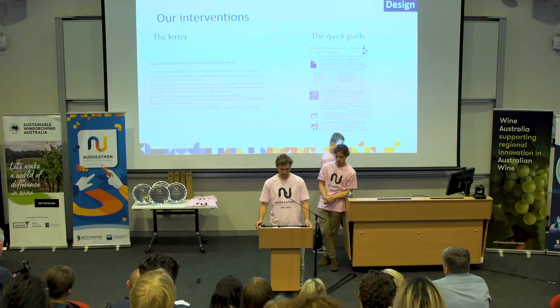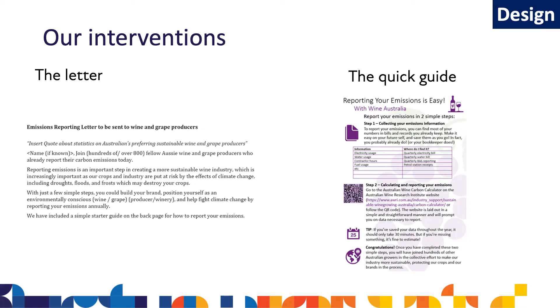Based on the pain points we've identified, we've chosen two interventions that complement each other in addressing the identified challenges, but are also capable of standing alone if required. The first intervention is a letter to be provided to growers and producers, and the second is a quick guide intended to replace the current 12-page brochure that explains the process of uploading data. Noting that we're not seeking to raise awareness with these artifacts — rather we're trying to fast-track a process that most growers and producers have already accepted as part of their future. These will be sent together via email or letter at tax time, when reporting is already salient and the required data is on hand.